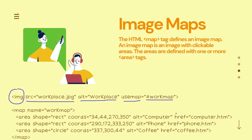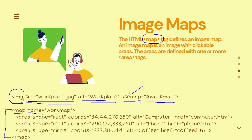So again: you have to use the img tag. In the src attribute, you specify the image. In the alt attribute, you specify alternate text. Then you specify useMap — which is an attribute — in which, with a hash symbol, you specify a name that will be used as the map name. The name attribute within the map tag will contain the same name that we used within the useMap attribute of the img tag.